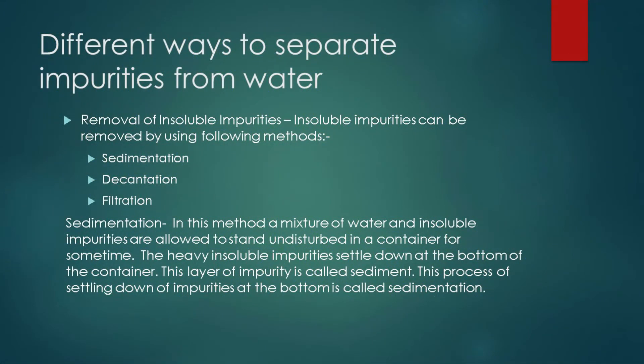Different ways to separate impurities from water — removal of insoluble impurities. Insoluble impurities can be removed by the following methods: sedimentation, decantation, and filtration. In sedimentation, a mixture of water and insoluble impurities is allowed to stand undisturbed in a container for some time. The heavy insoluble impurities settle down at the bottom. This layer of impurity is called sediment, and the process is called sedimentation.